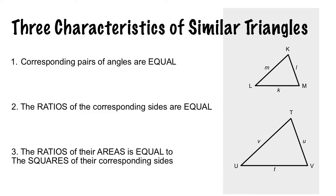There are three characteristics of similar triangles. First, corresponding pairs of angles are equal. So the angle at L and the angle at U are exactly the same angle, say 45 degrees. K and T will be exactly the same, and M and V will also be the same.